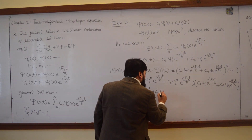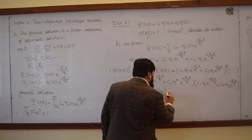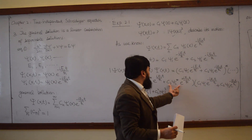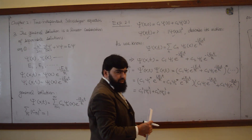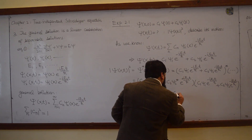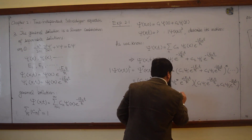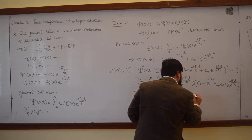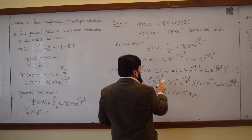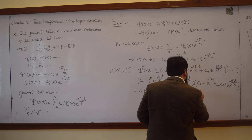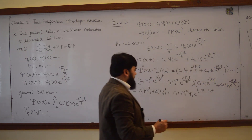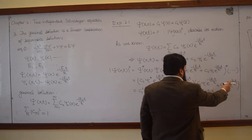Multiplying out the terms: the first term gives C1² |ψ1|² plus C2² |ψ2|². The cross terms give C1 C2 ψ1* ψ2 e^(i(E1−E2)t/ℏ), since the exponents combine to give i(E1−E2)/ℏ times t.